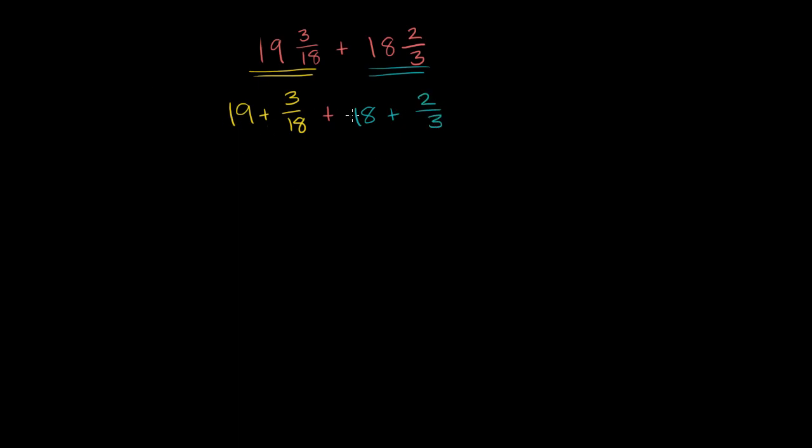Now we can separately add the whole number parts. So we could add the 19 to the 18. So we could do 19 plus 18. And then we can add the fraction parts. Plus 3 over 18 plus 2/3.